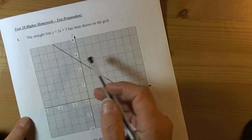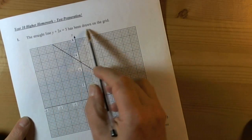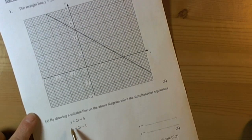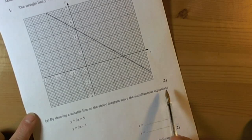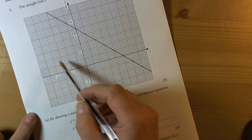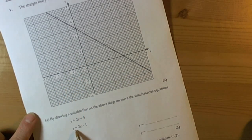Okay, so this question is asking you to work with a graph and it's got a straight line drawn already. The question is asking, by drawing a suitable line on the above diagram solve the simultaneous equations. We can see that y plus 2x equals 5 has already been drawn for us, so they're asking us to draw y equals 2x minus 1.